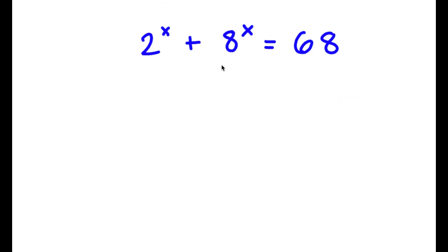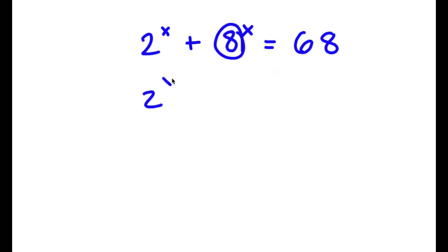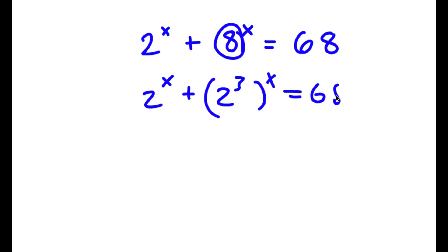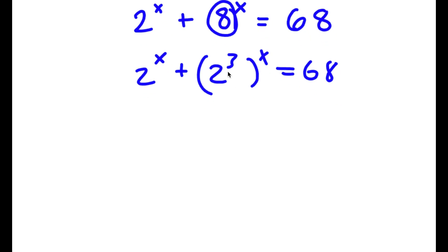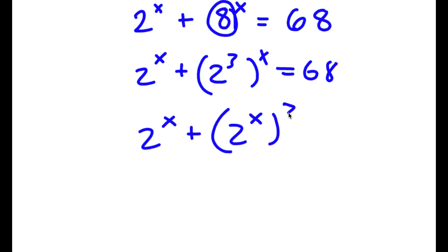In this problem I have 2 to the power of x plus 8 to the power of x equals 68. First we rewrite 8 as 2 to the power of 3. So now I have 2 to the power of x plus 2 to the power of 3 to the power of x, which I can rewrite as 2 to the power of x plus 2 to the power of x to the power of 3, and this is equal to 68.